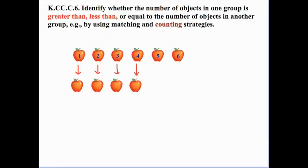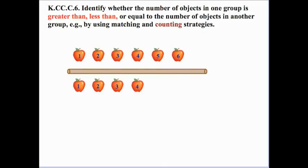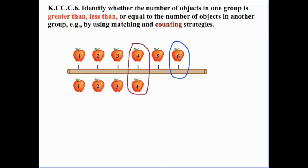Now let's look at the counting strategy. We count the top group — there's six. We count the bottom group — there's four. We line them up horizontally for a purpose: we're laying the foundation at the kindergarten level for the number line. If you visualize a line — or use something physical like a wooden dowel — students can see that the larger number six is further to the right than the smaller number four. Students will see that a number further to the right is larger, and a number further to the left is smaller.